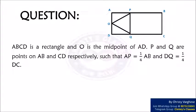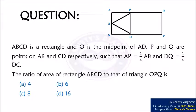Question. ABCD is a rectangle and O is the midpoint of AD. P and Q are points on AB and CD respectively such that AP is equal to 1/4 of AB and DQ is equal to 1/4 of DC.